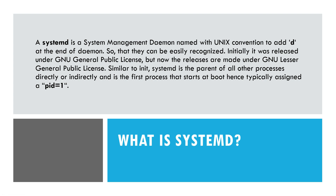What is systemd? Systemd is a system management daemon named following Unix convention of adding 'd' at the end so that daemons can be easily recognized. Initially it was released under the GNU General Public License, but now releases are made under the GNU Lesser General Public License. Similar to init, systemd is the parent of all other processes directly or indirectly, and is the first process to start at boot, hence typically assigned PID 1. Systemd may refer to all the packages, utilities, and libraries around the daemon. It was designed to overcome the shortcomings of init.